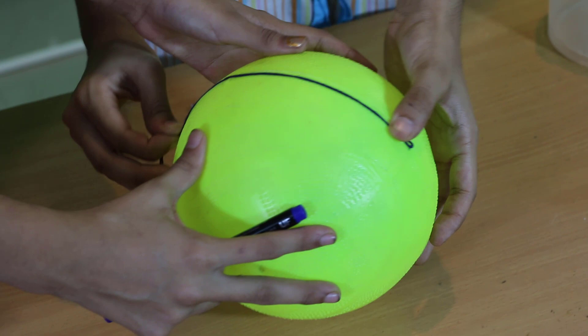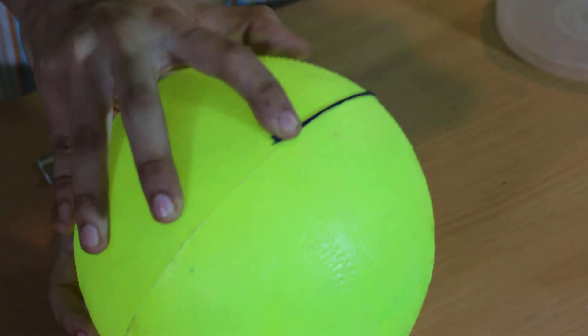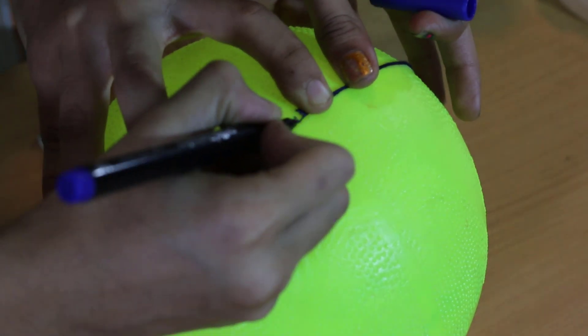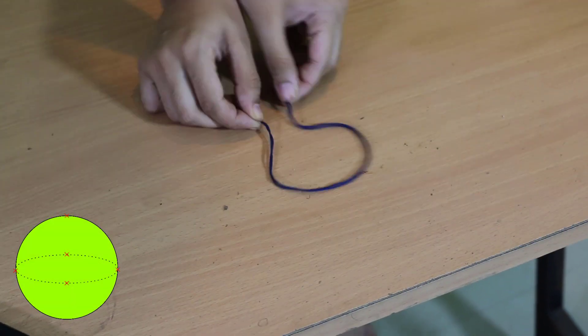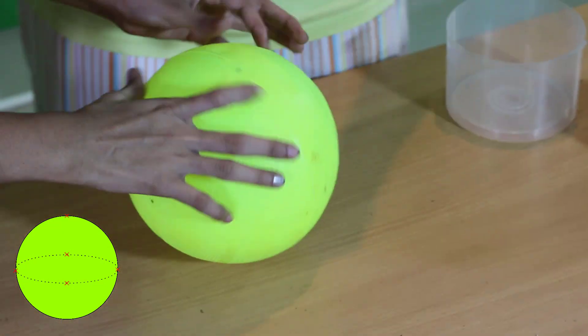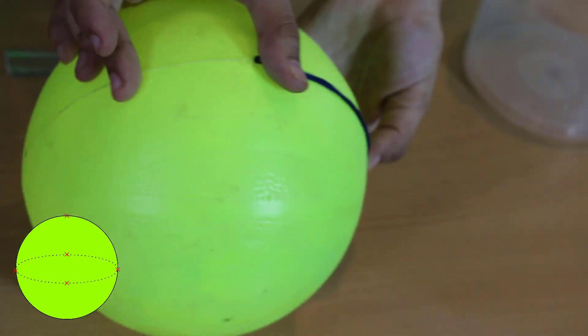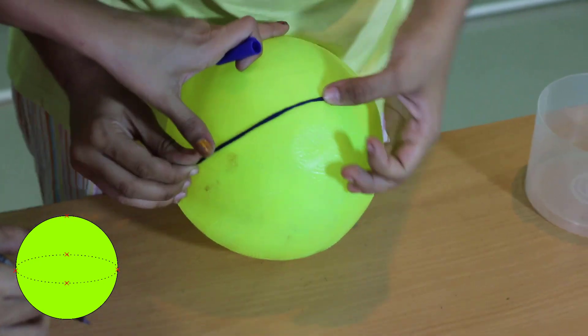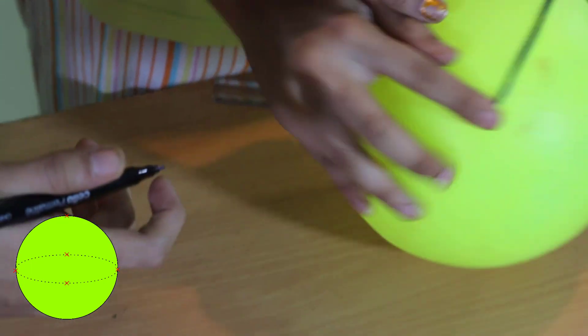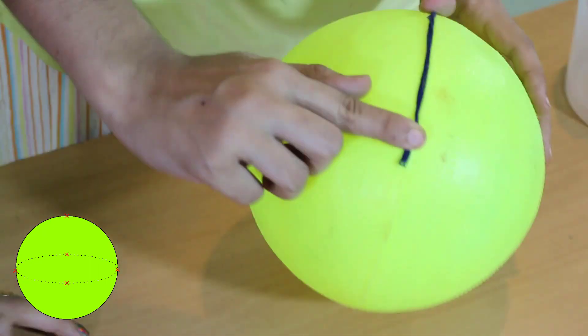Make the second marking on half the circumference by doubling the thread. Now, let us make the other markings by further doubling the thread. Carefully, make all the markings as shown in the image.